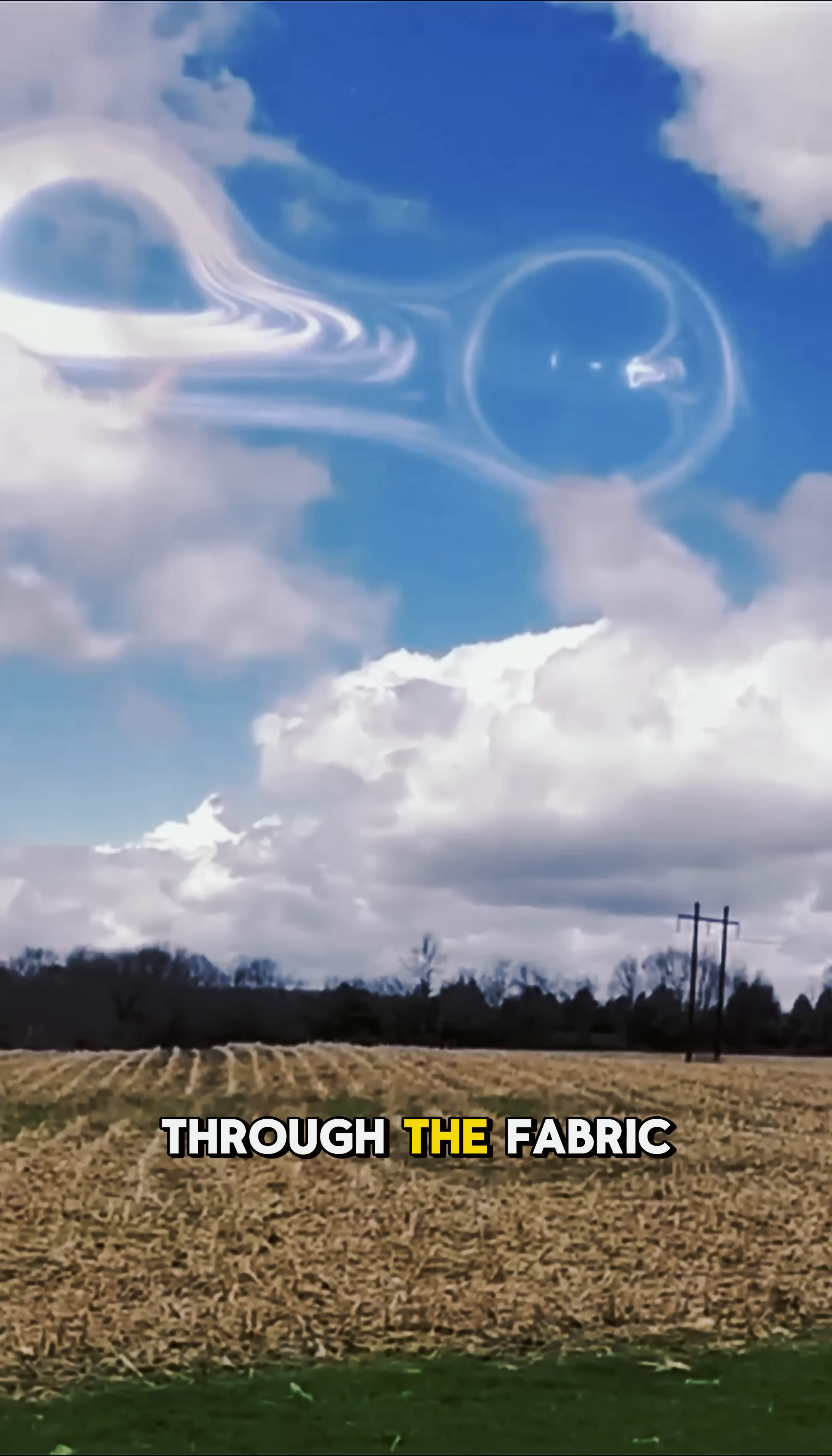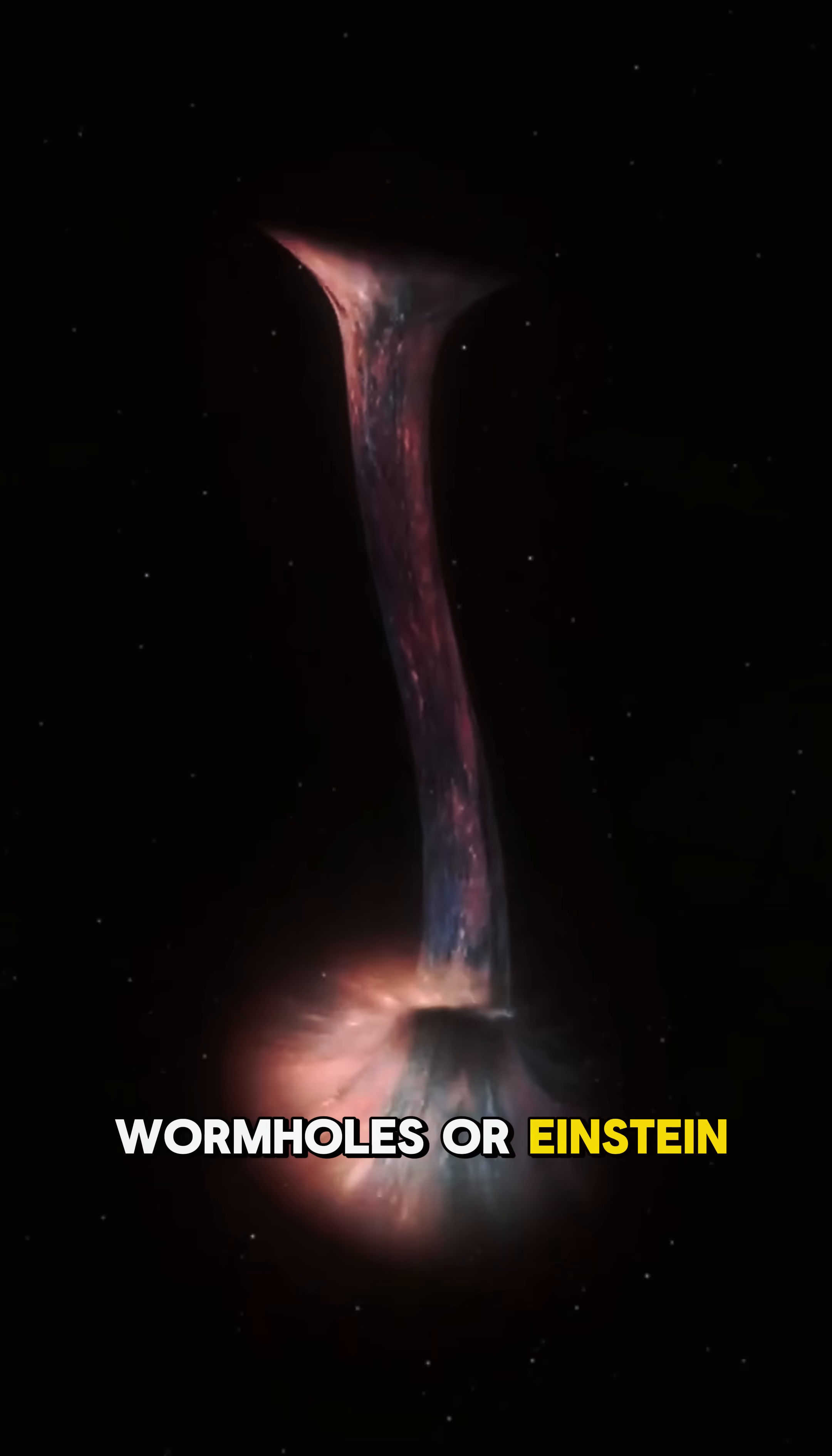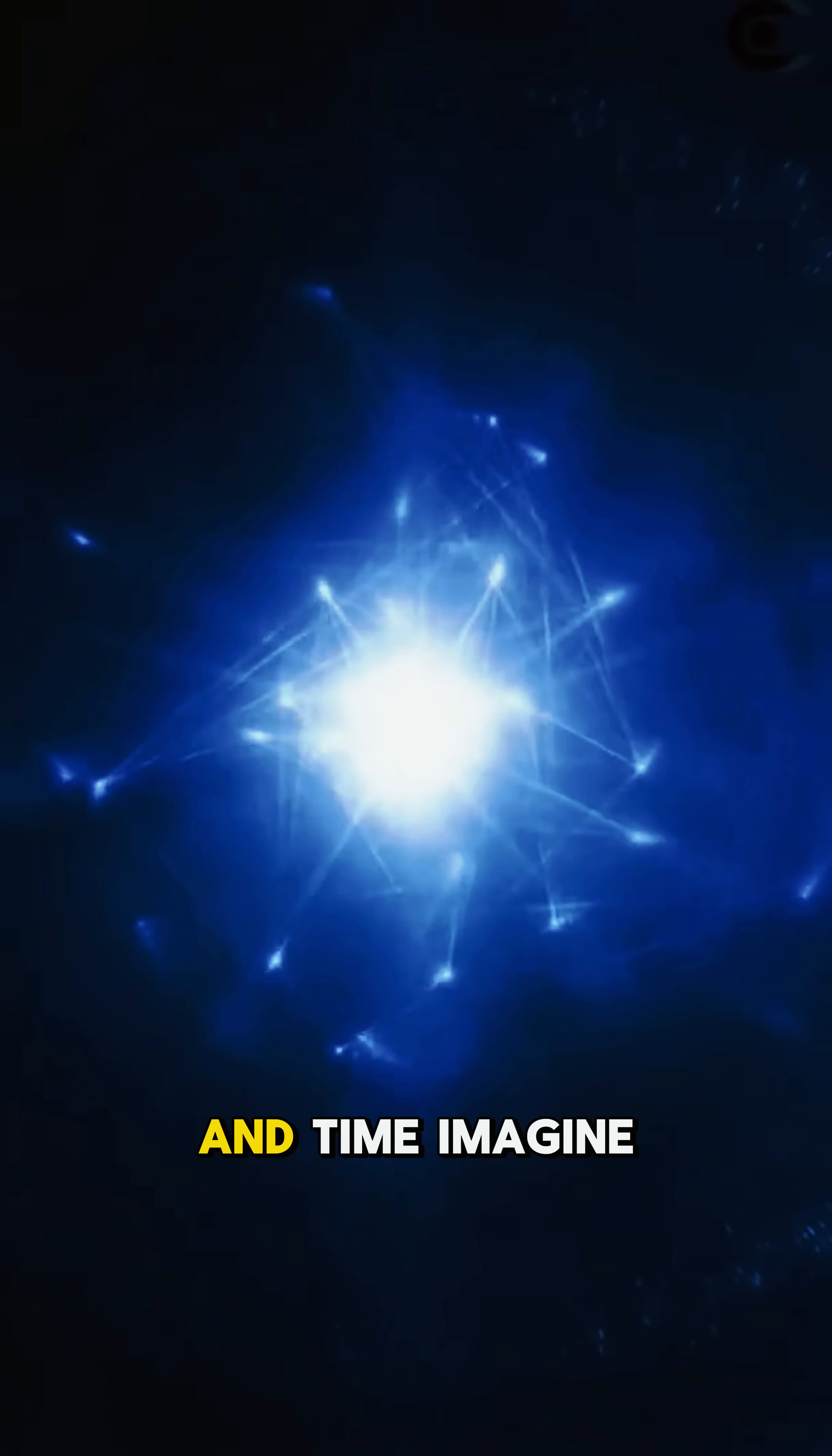What if there was a shortcut through the fabric of space itself? Wormholes, or Einstein-Rosen bridges, are theoretical tunnels that could connect two distant points in space and time.